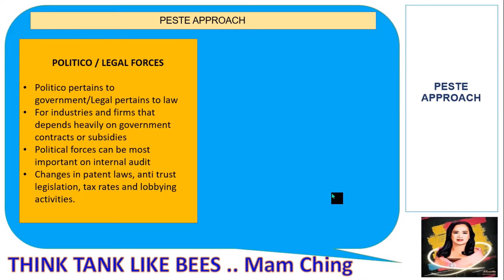Under the PESTE approach, we have political and legal forces. Political pertains to government and legal pertains to law. For industries and firms that depend heavily on government contracts or subsidies, political forces can be most important. Changes in patent law, antitrust legislation, tax rates, and lobbying activities are key examples.